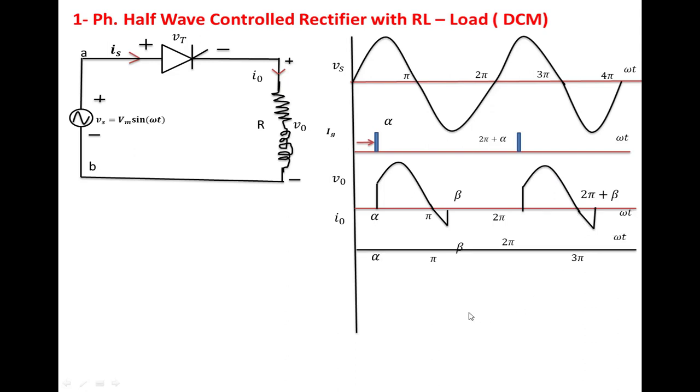If we draw the output current waveform, when the load is subjected to positive voltage, the current increases to its maximum value. When the load is subjected to negative voltage, the current decreases.